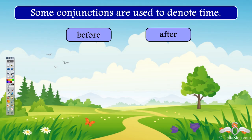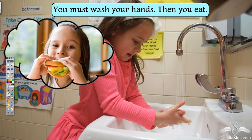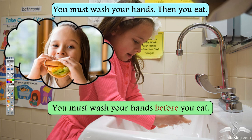So some conjunctions are used to denote time. 'Before' and 'after' are two such conjunctions which we use to denote time. For example: 'You must wash your hands. Then you eat.' Which action happens earlier? You must wash your hands — this happens earlier. Then you eat. So we will write: 'You must wash your hands before you eat,' because this is what we need to do earlier, and then only we can eat.